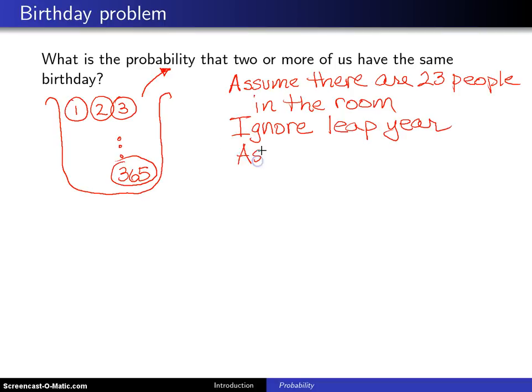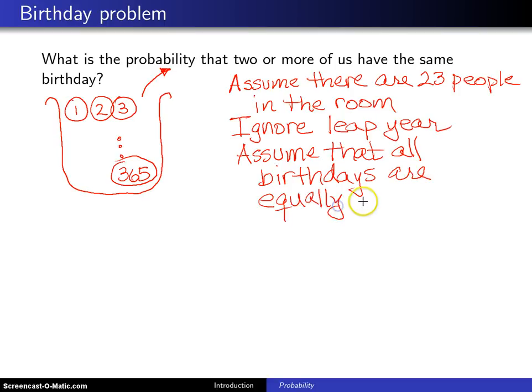So when I do this, I am also making the assumption that all birthdays are equally likely. That is not true in practice. There are slight differences between all of them. But to work the problem, it will make the mathematics a little bit easier. So we're going to make that assumption.